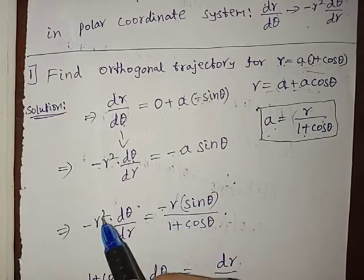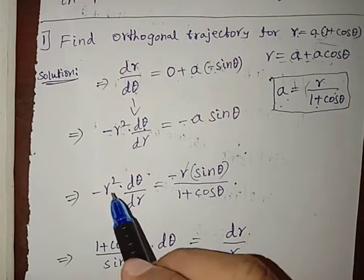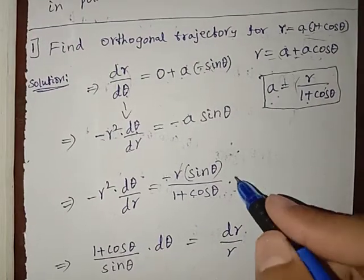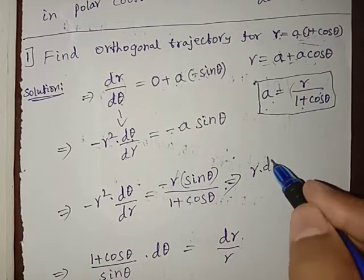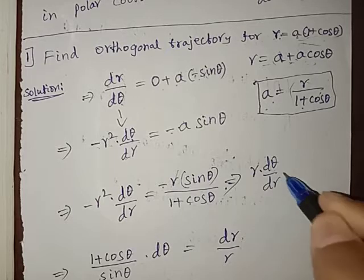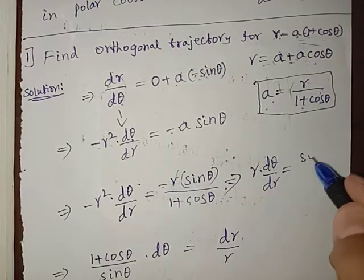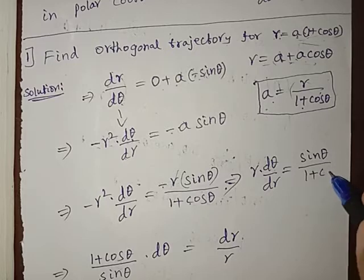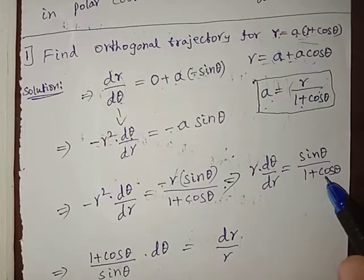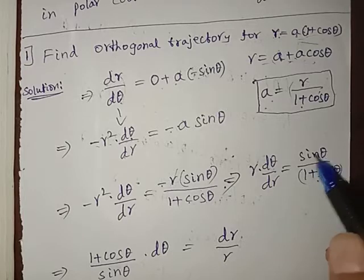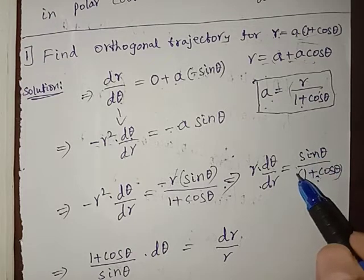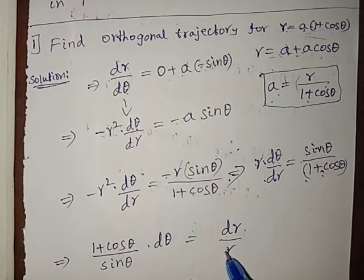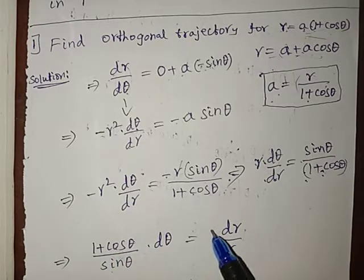The minus r cancels on both sides, giving r dθ/dr = sinθ / (1 + cosθ). Rearranging, we get dr/r = (1 + cosθ)/sinθ dθ. We can now integrate both sides.